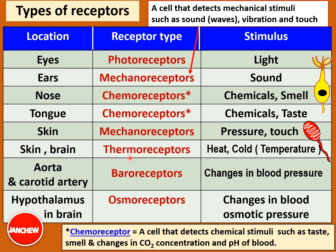In the skin and brain we have thermoreceptors that can detect the stimulus of heat or cold — thermal means heat — and they help control body temperature. The aorta and carotid artery near the heart have groups of cells called baroreceptors; the word baro means pressure, and baroreceptors detect changes in blood pressure, which we'll discuss in the next video. The hypothalamus in the brain contains osmoreceptors — cells sensitive to changes in blood osmotic pressure, meaning the concentration of salts and water.